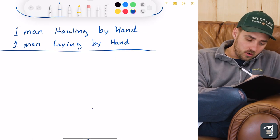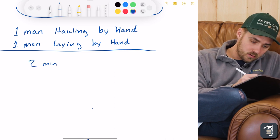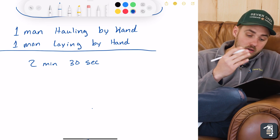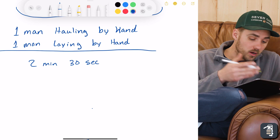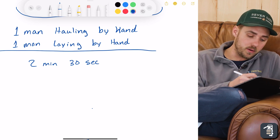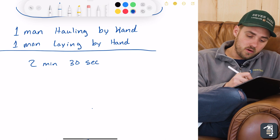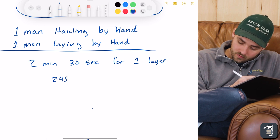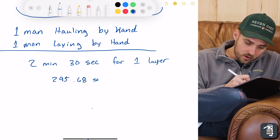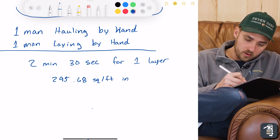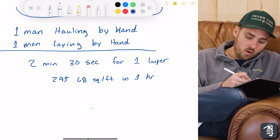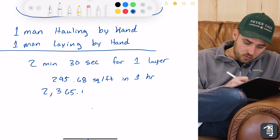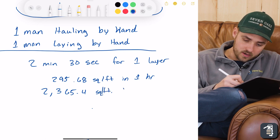So with two men, we're able to install a layer in two minutes and 30 seconds. Now, like I said, you can put these numbers in yourself and do it with your production and your guys, because your guys might be a little bit quicker, they might be a little bit slower, whatever it might be. Two minutes and 30 seconds for one layer pavers. So now that equates to 295.68 square feet in one hour. Now over the course of a day, that is 2,365.4 square feet a day, eight hours.